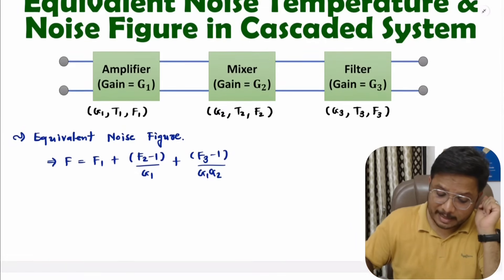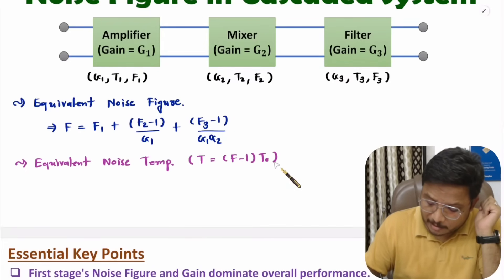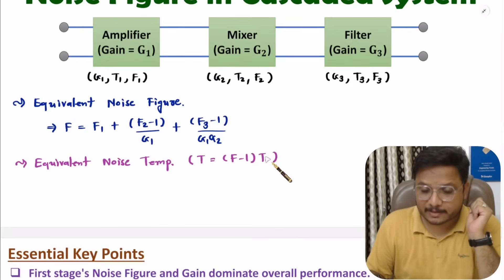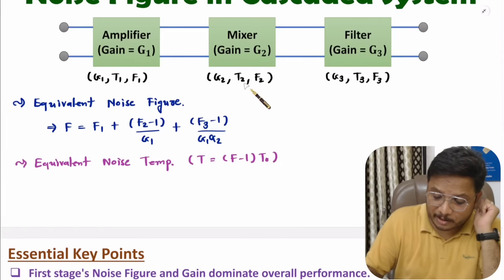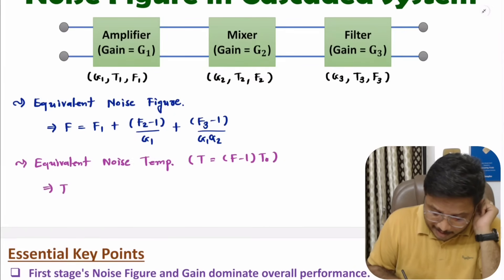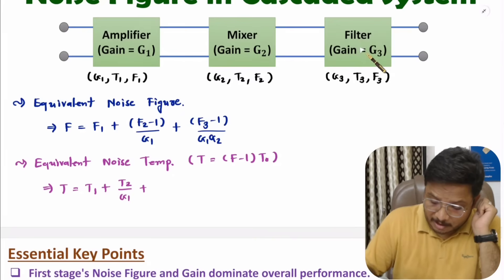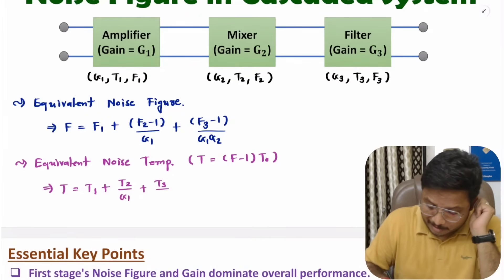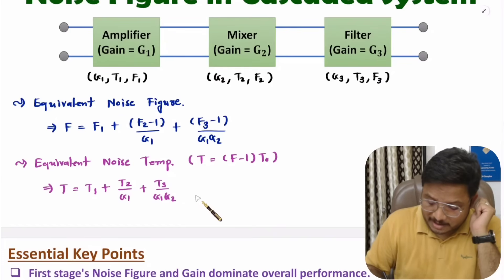Now let me explain the equivalent noise temperature calculation. The equivalent noise temperature T equals F minus 1 times T-naught, where F is the equivalent noise figure and T-naught is room temperature. If you want to calculate equivalent noise temperature based on T1, T2, and T3, then the standard procedure is: T equals T1 plus T2 divided by G1, plus T3 divided by G1 times G2. If you have a fourth block, add T4 divided by G1 times G2 times G3.